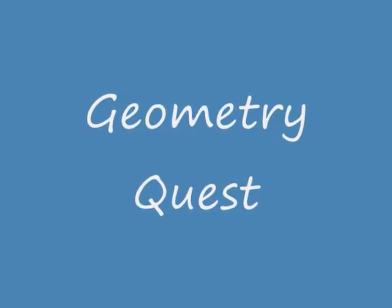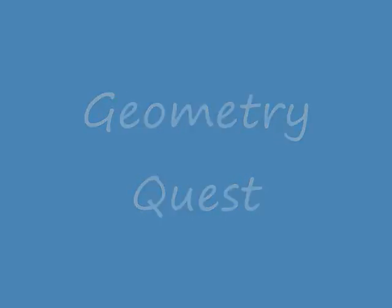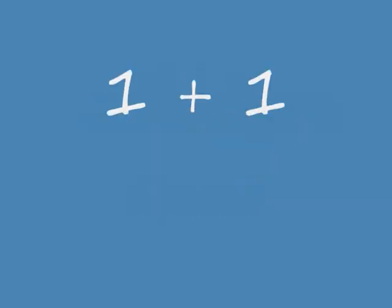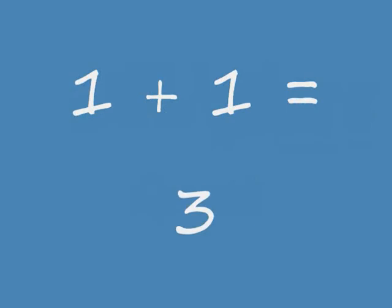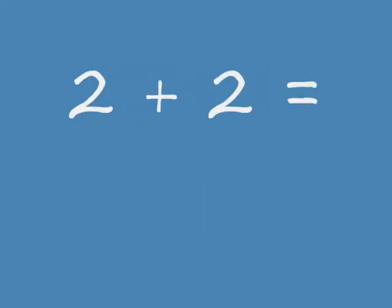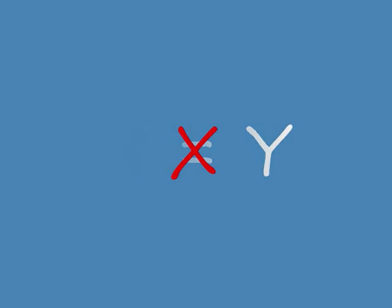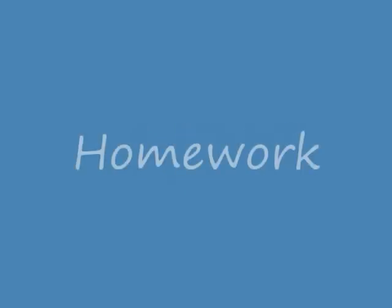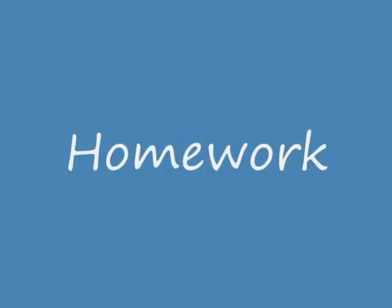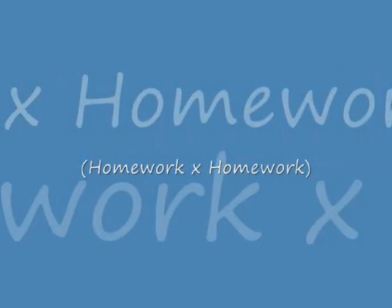Let's start with something simple, like 1 and 1 ain't 3, and 2 plus 2 will never get you 5. There's fractions in my subtraction, and x don't equal y, but my homework is bound to multiply.